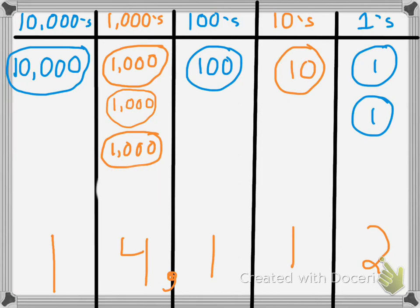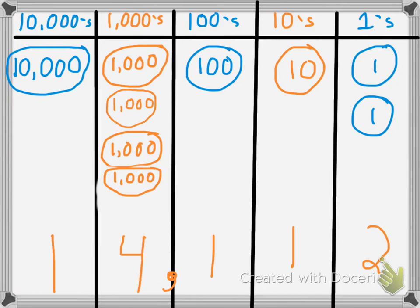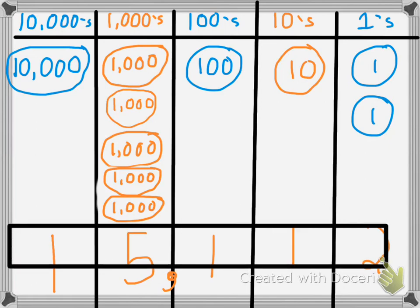Now I'm going to decrease the number by a thousand by getting rid of a 1,000 number disk. That changes my 4 into a 3, so I now have 13,112 — which is 1,000 less than 14,112. The number is going to change again: let's increase it by a thousand, which gives us 14,112, then increase it by another thousand, which gives us 15,112. We can see we changed that number by decreasing it by a thousand and increasing it by a thousand, and we also increased it by 10,000, giving us the final number of 15,112.